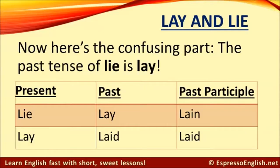Now here's the confusing part. The past tense of lie is lay. It's lie in the present, lay in the past, and the past participle is lain. For the verb lay, it's lay in the present, laid in the past, and the past participle is also laid.